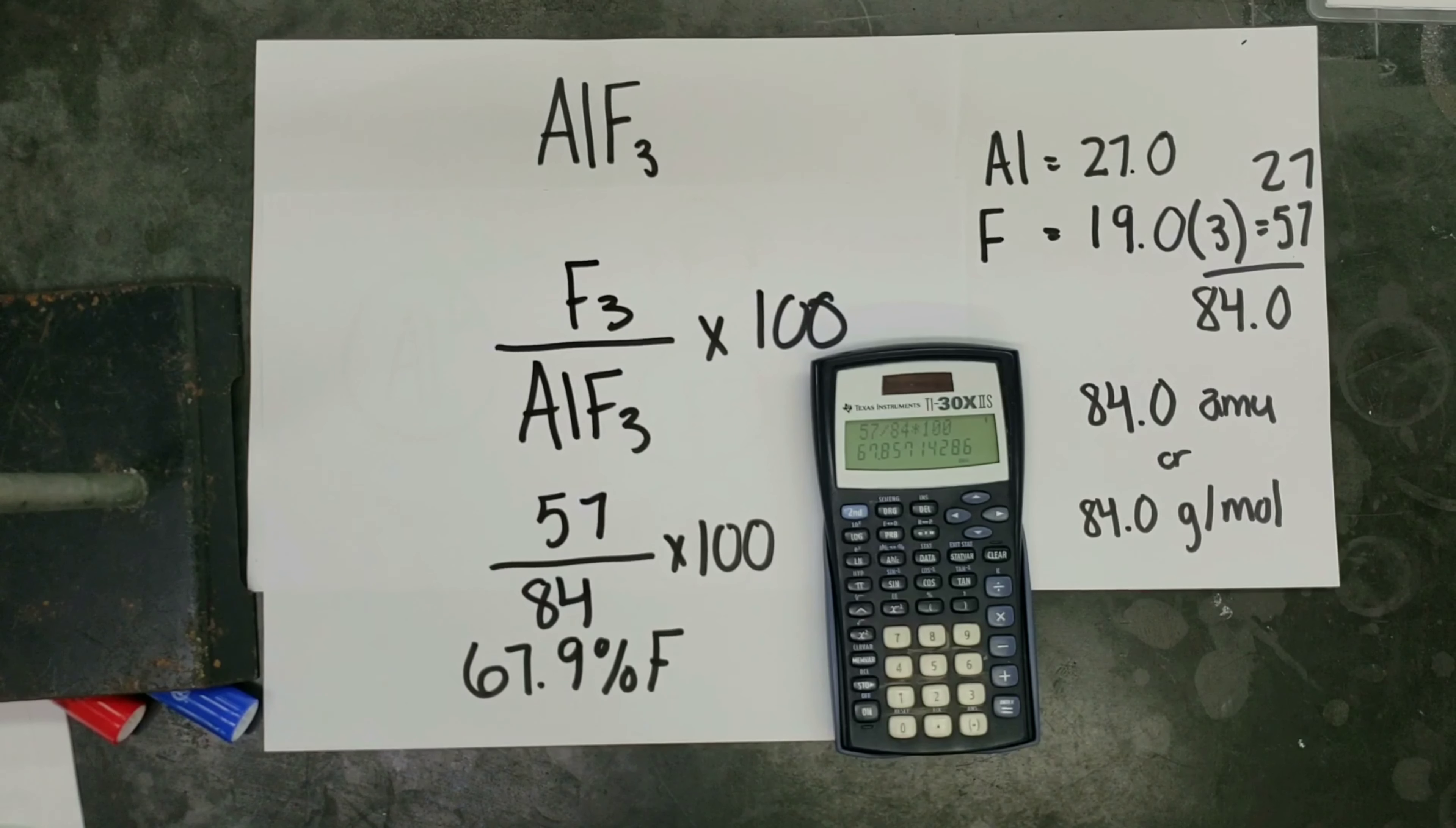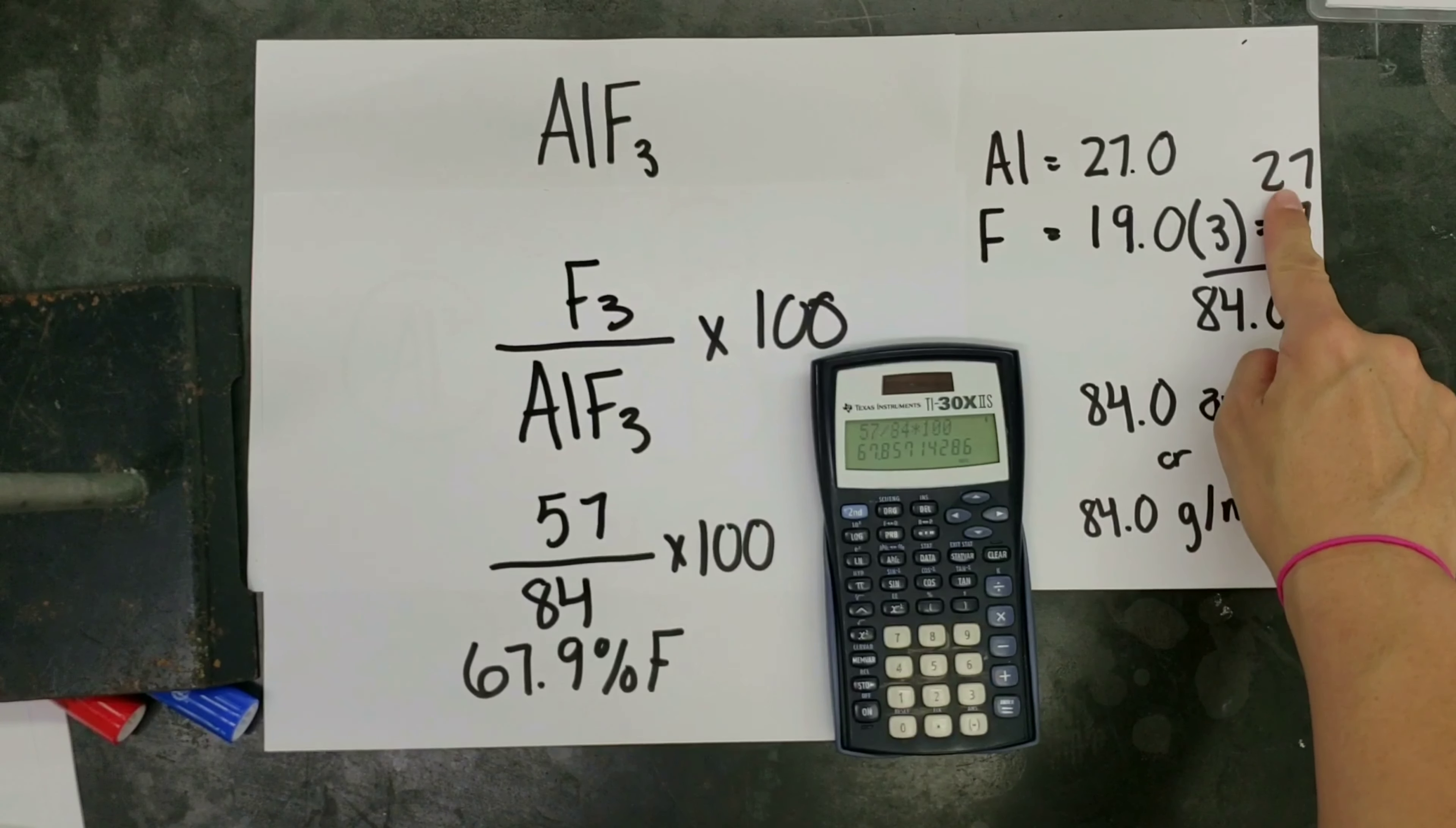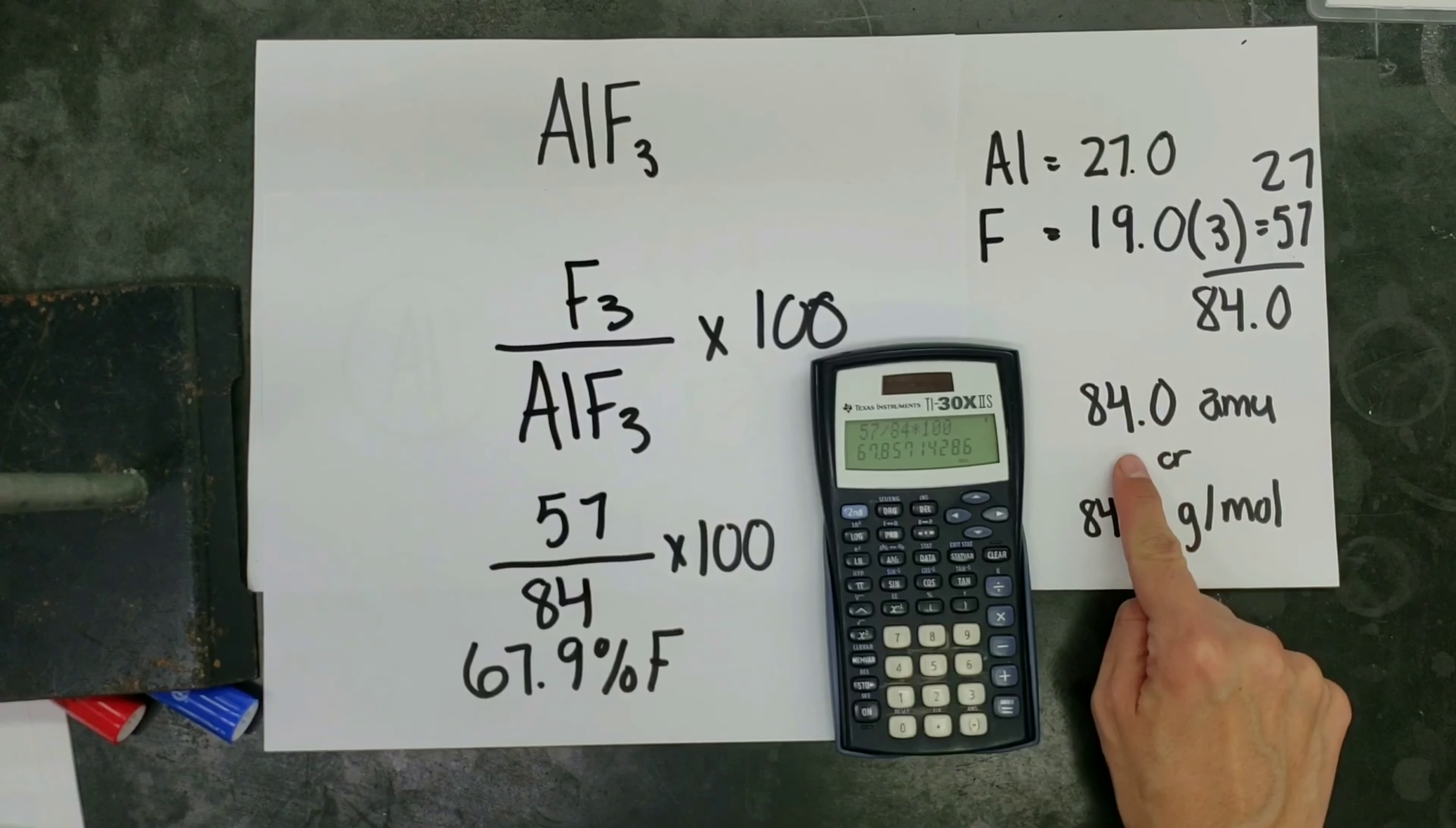If we wanted to find the percent by mass of aluminum, we could make the fraction 27 divided by 84, or we could simply subtract from 100.